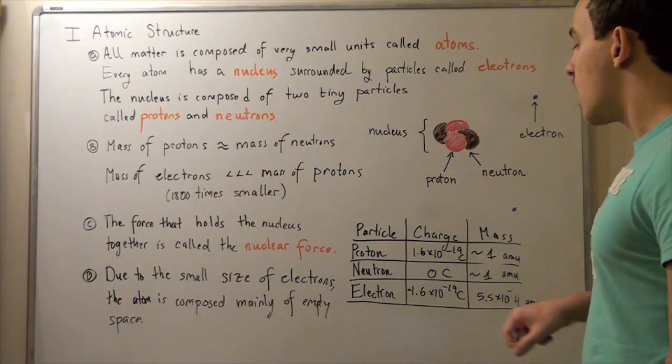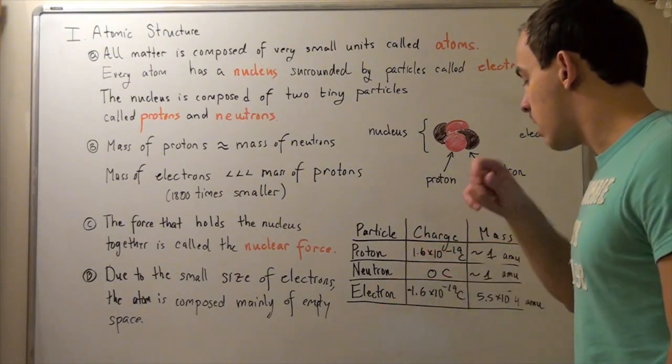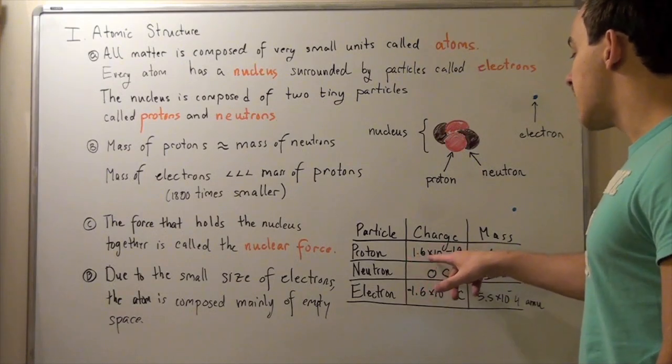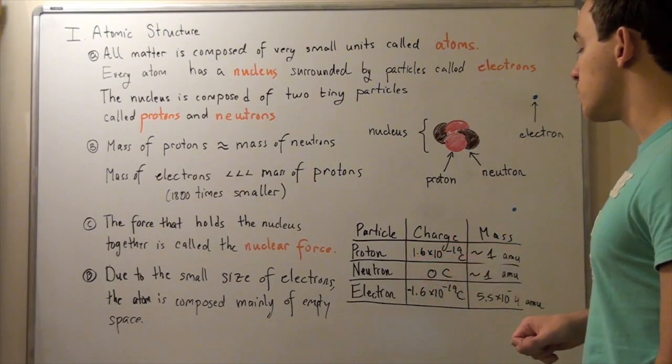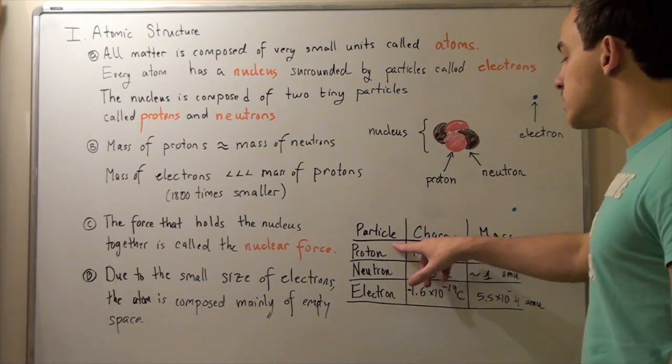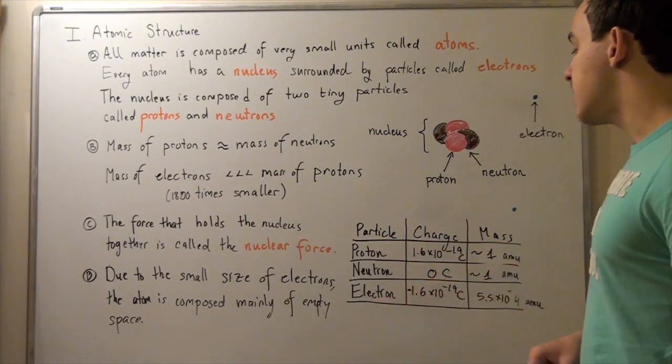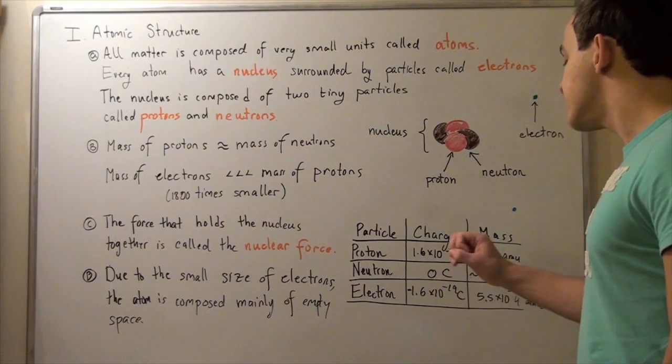The charge, however, of a proton and an electron have the same magnitude, 1.6 times 10 to negative 19 coulombs. However, the sign of a proton is positive, while the sign of an electron is negative. A neutron has zero charge. It's a neutral charge.